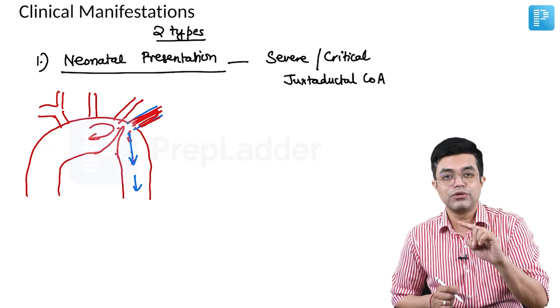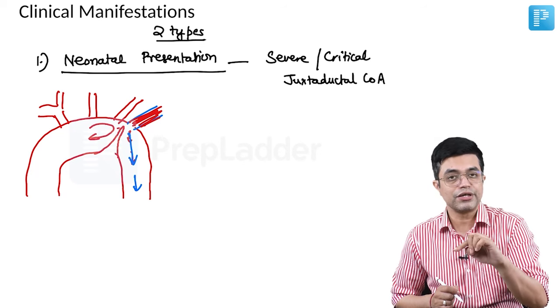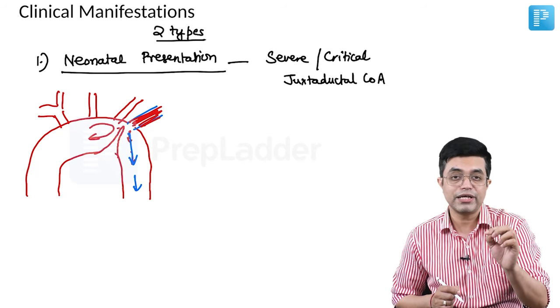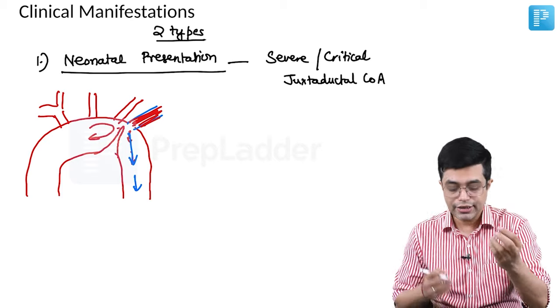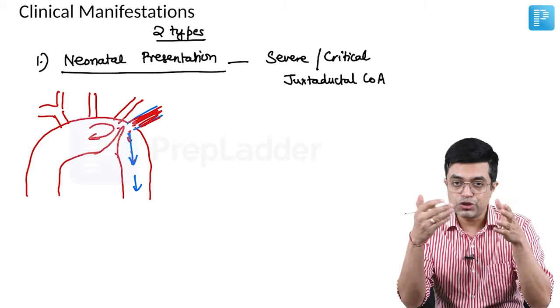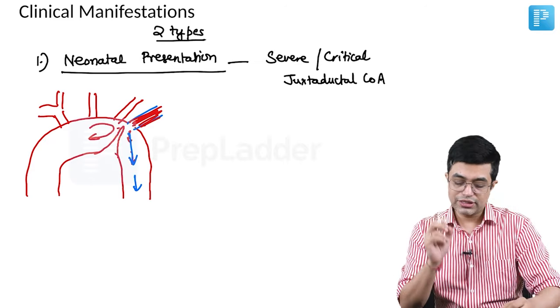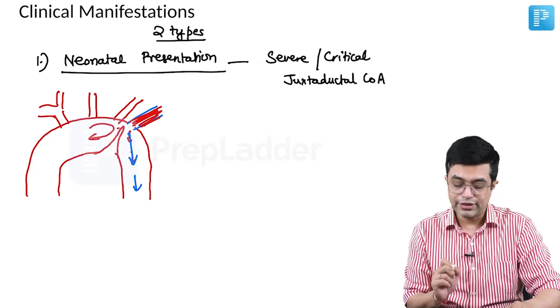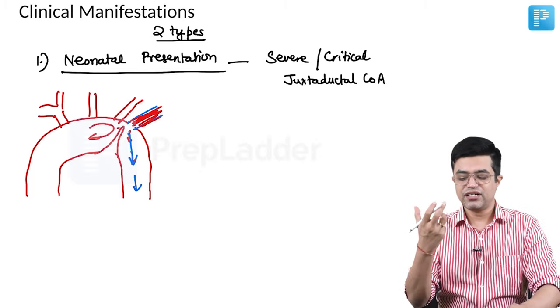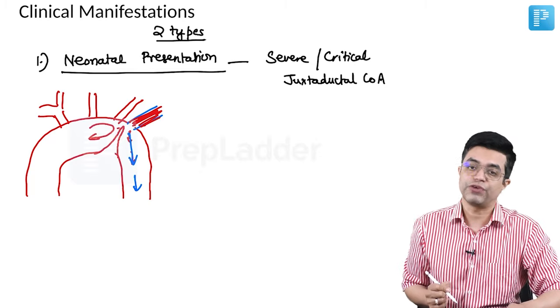Since systemic circulation is being maintained by ductus arteriosus, it is an example of a duct dependent lesion. You give prostaglandin, the ductus arteriosus will open, it will ensure blood supply to the lower limbs till surgery can be undertaken. Such presentation will be seen in neonatal presentation where there is a severe critical juxtaductal coarctation of aorta.